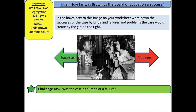Let's make a judgment on how far Brown versus Board of Education was a success. On your worksheet you will see two columns — one green, where you list all the successful things that came from this case, and on the other side all the issues you think the case would have caused. Yes, it desegregated schools, but would that cause an issue? Are white people going to change their thinking just because schools are desegregated, or are there still going to be problems? And then a challenge extension task: was the case a triumph or a failure? Add that beneath the table on your worksheet.